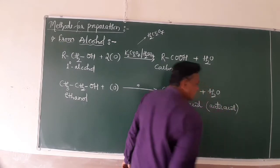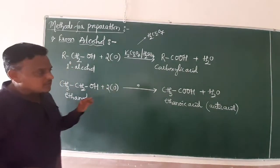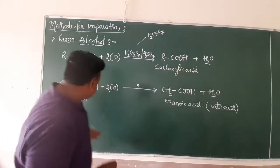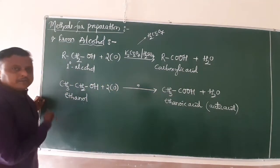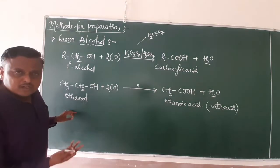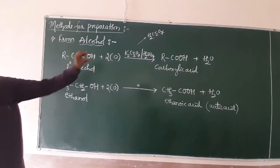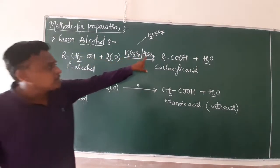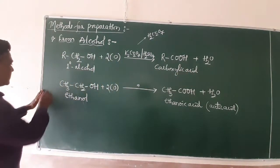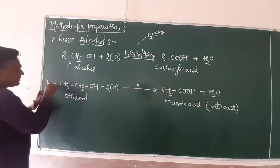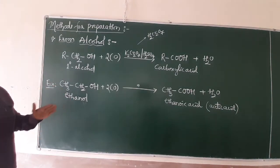Acetic acid is your product compound. When ethanol undergoes complete oxidation, it converts into ethanoic acid. Similarly, propanol converts into propionic acid, and benzyl alcohol converts into benzoic acid. So various types of primary alcohols undergo oxidation with acidified potassium dichromate to form carboxylic acids — ethanol, propanol, benzyl alcohol, etc.